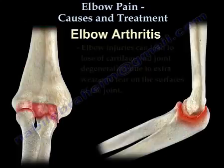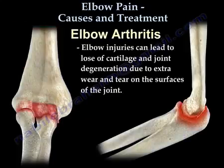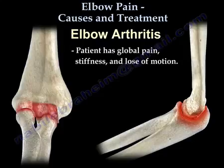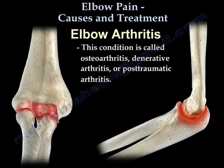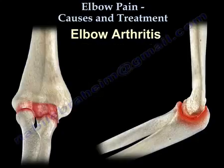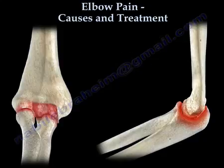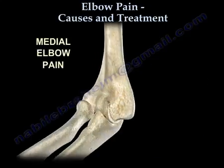Elbow arthritis occurs due to loss of cartilage and joint degeneration with loss of joint space. The patient has global pain, stiffness, and loss of motion. This condition has many names but is commonly called osteoarthritis. Treatment includes non-steroidal anti-inflammatory medication, injection therapy, and rarely surgery.